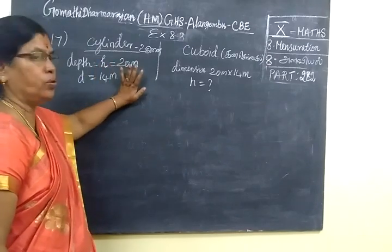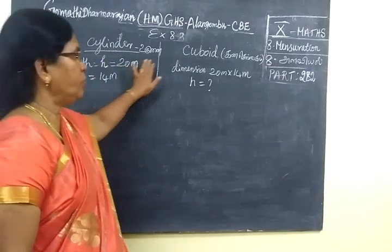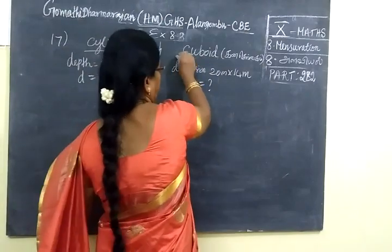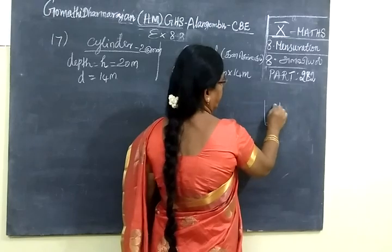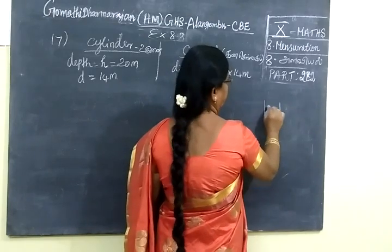The volume is equal. The cube is equal to the cube shape. You can add the vanilla shape. This is the pan.